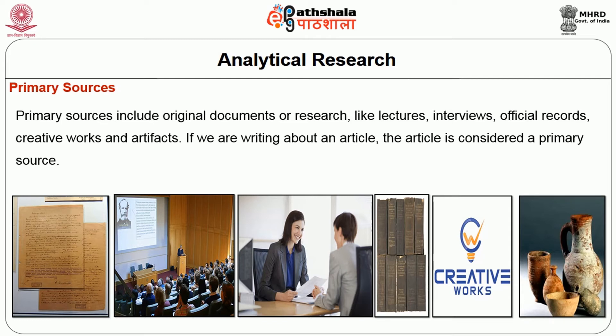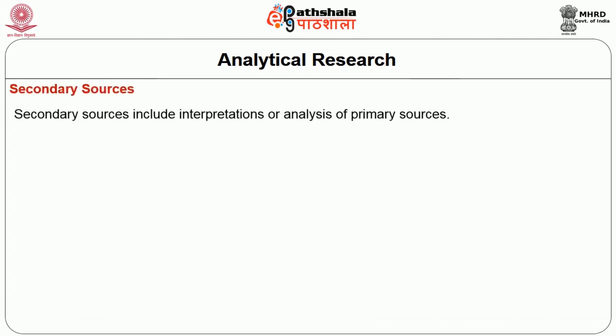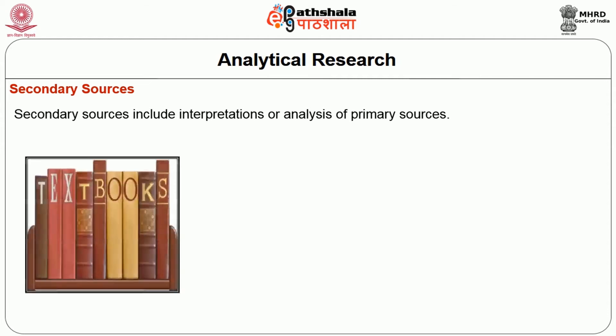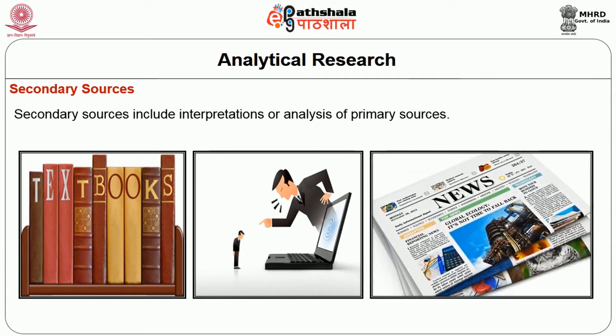If we are writing about an article, the article is considered a primary source. Secondary sources include interpretations or analysis of primary sources. Therefore, examples of secondary sources include textbooks, criticisms and newspaper or magazine articles.